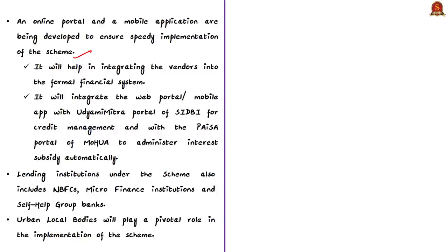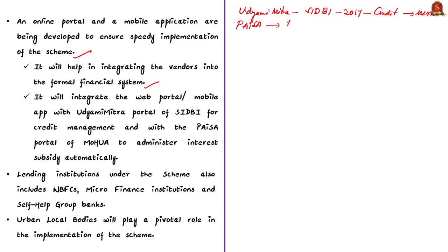This platform will also integrate with the Udyami Mitra portal of SIDBI for credit management and the PISA portal of the Ministry of Housing and Urban Affairs. The Udyami Mitra portal was launched by SIDBI (Small Industries Development Bank of India) in 2017 to improve accessibility of credit and hand-holding services to MSMEs. PISA stands for Portal for Affordable Credit and Interest Subvention Access, an initiative under Deen Dayal Antyodaya Yojana–National Urban Livelihoods Mission. The interest subsidy of 7% is channeled through the PISA portal. Lending institutions under the SVANidhi scheme also include NBFCs, MFIs and self-help groups. Urban local bodies will play a pivotal role in implementation.